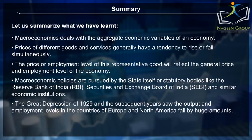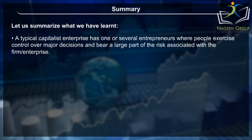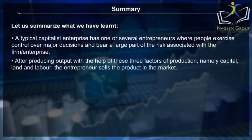The Great Depression of 1929 and the subsequent years saw output and employment levels in the countries of Europe and North America fall by huge amounts. A typical capitalist enterprise has one or several entrepreneurs where people exercise control over major decisions and bear a large part of the risk associated with the firm. After producing output with the help of three factors of production — namely capital, land and labour — the entrepreneur sells the product in the market.